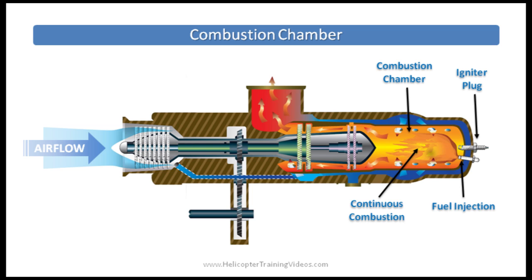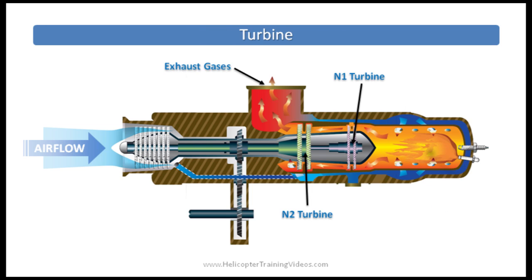Some have an automatic restart. Then there's the turbine section — hot expanding gases from the combustion area escape through the turbines, turning them. Depending on the model, that can be up to 20,000 or 50,000 revolutions per minute.